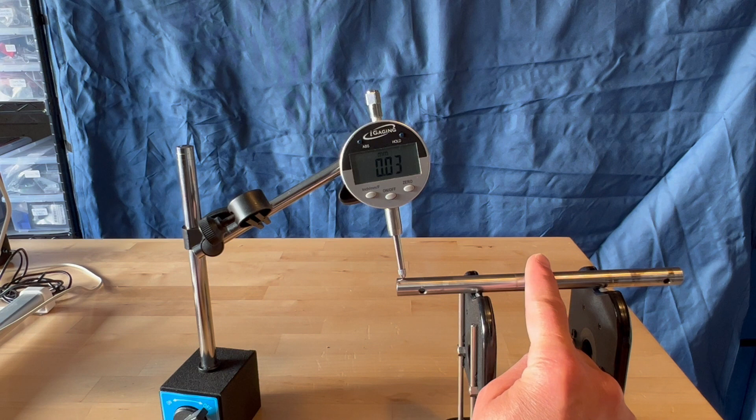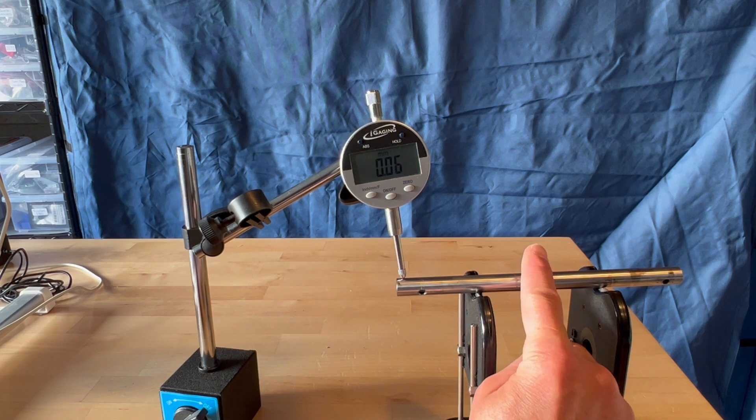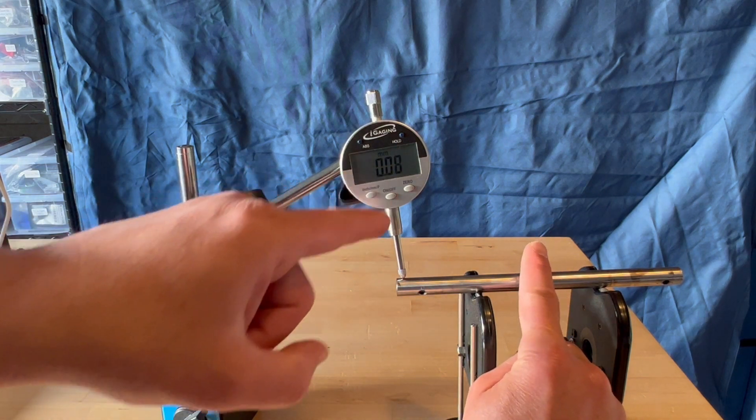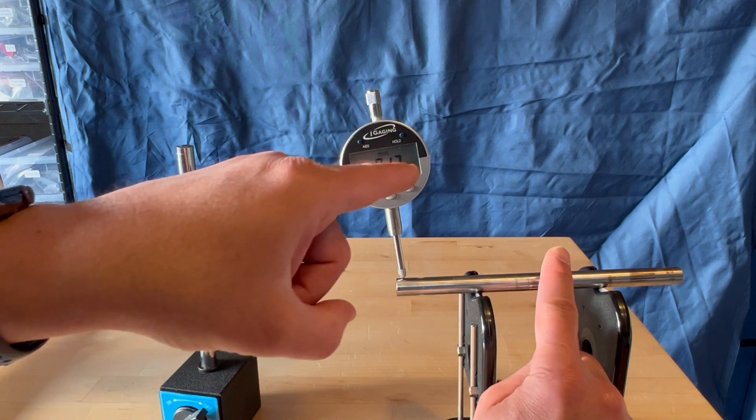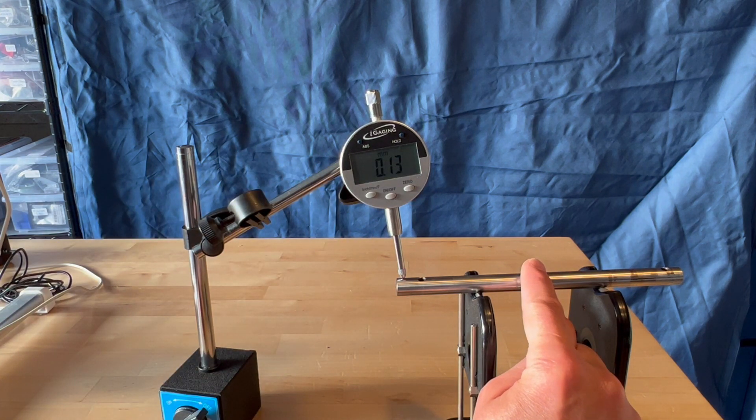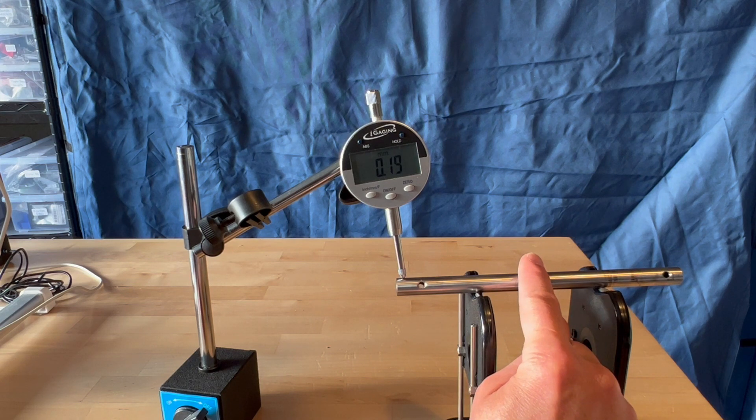And as you can see there are some imperfections on the shaft. 0.08, here is actually over a tenth of a millimeter, 0.2, 0.3, 0.4 millimeters.